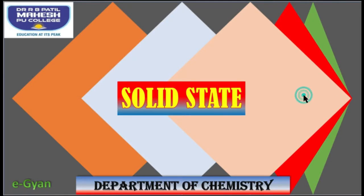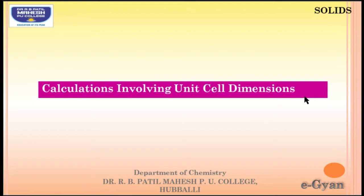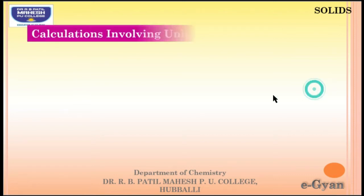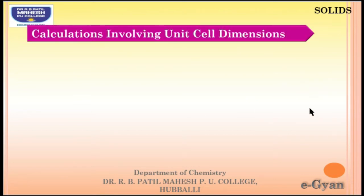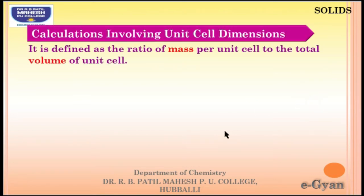Hello students, in today's class we are going to study about the calculation involving unit cell dimensions. The unit cell dimension is defined as the ratio of mass per unit cell to the total volume of unit cell — that is nothing but density. We will be solving numericals based on density.